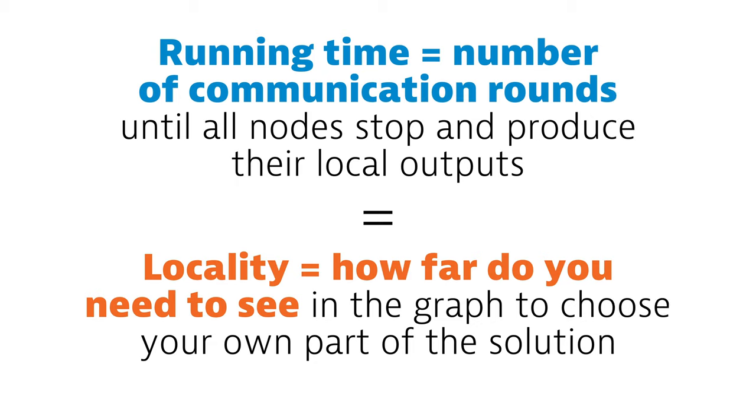So let's recap. All these notions are the same in the local model. What is the running time? Or how many communication rounds are needed? Or what is the locality of the problem? Or how far do you need to see in the graph?